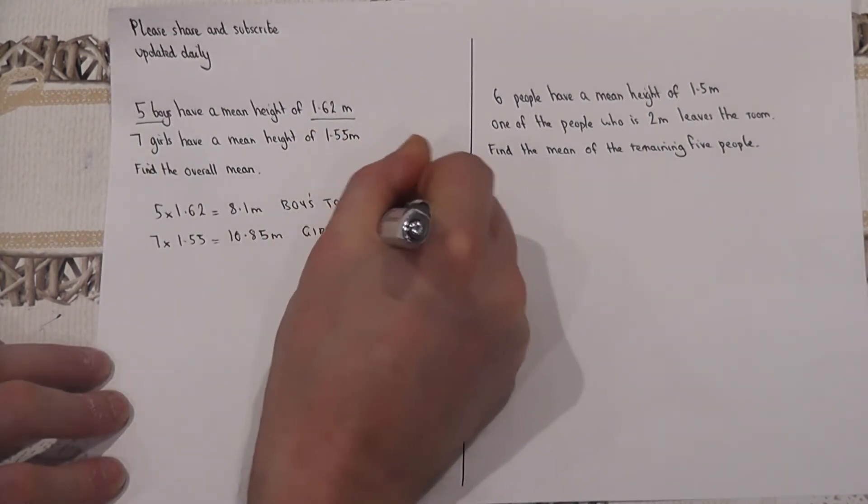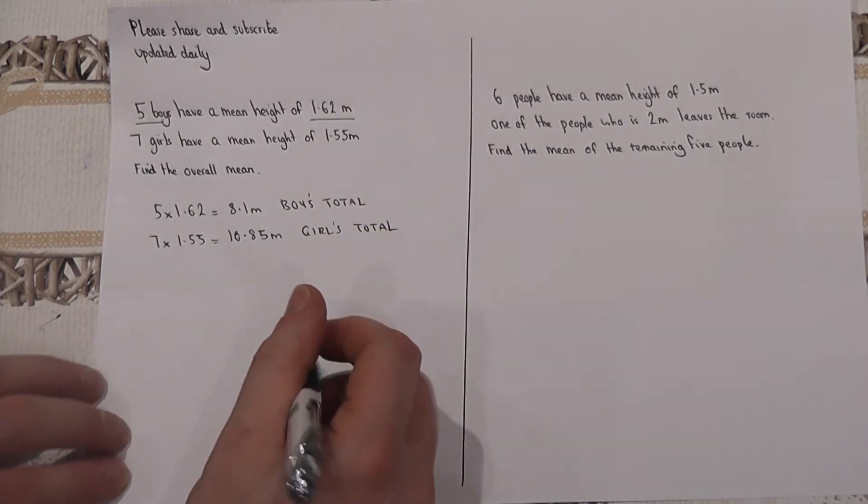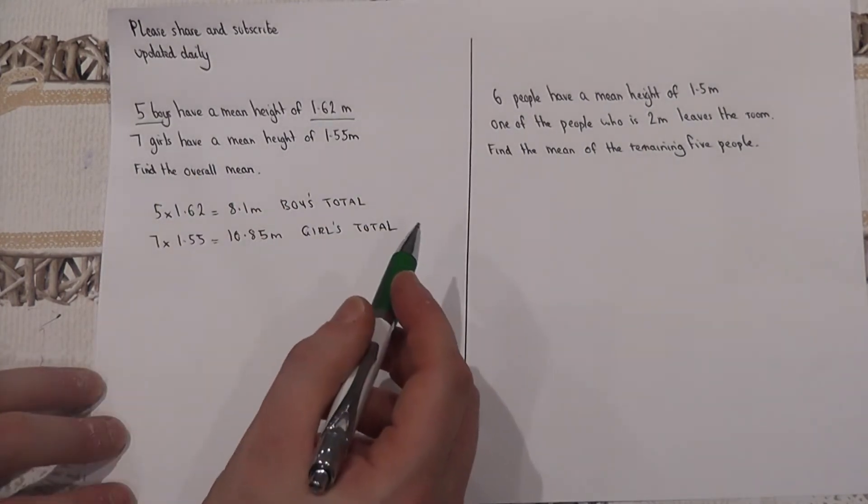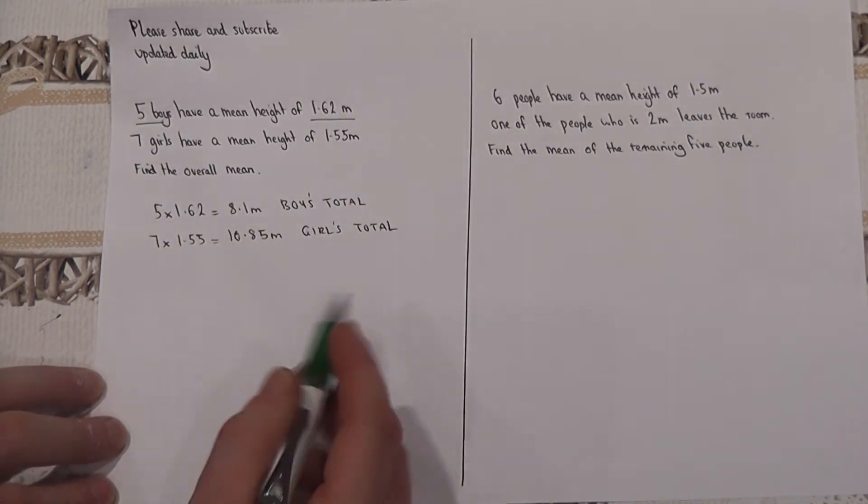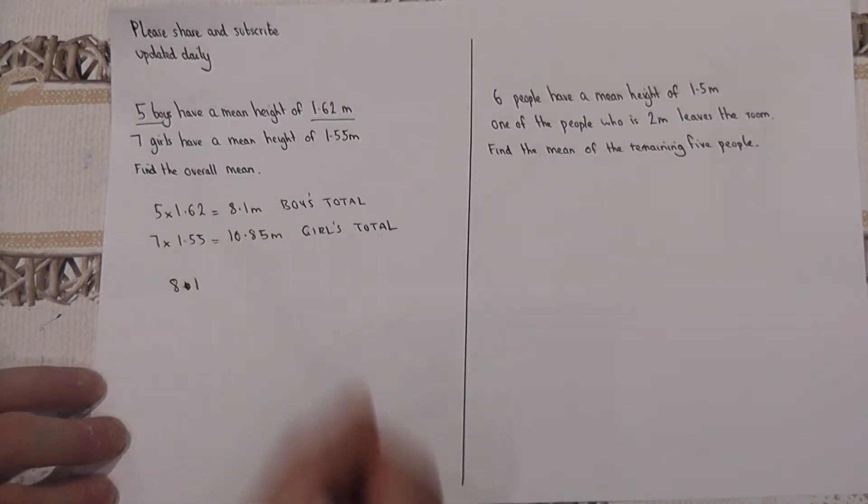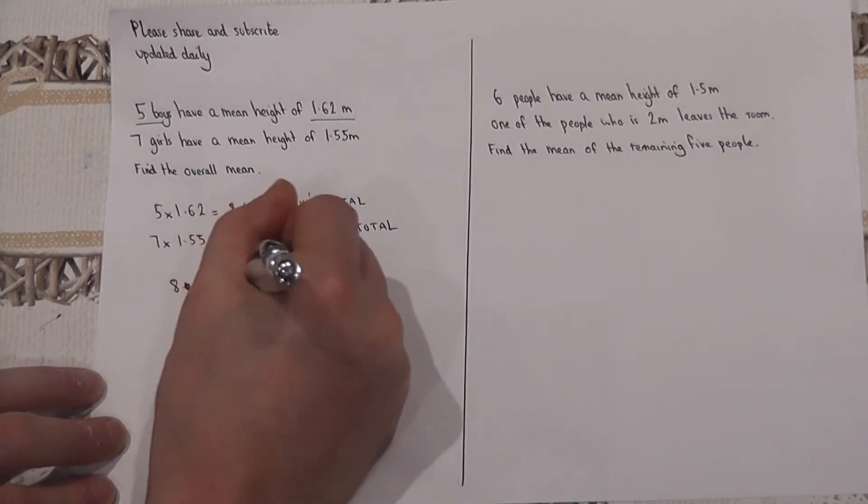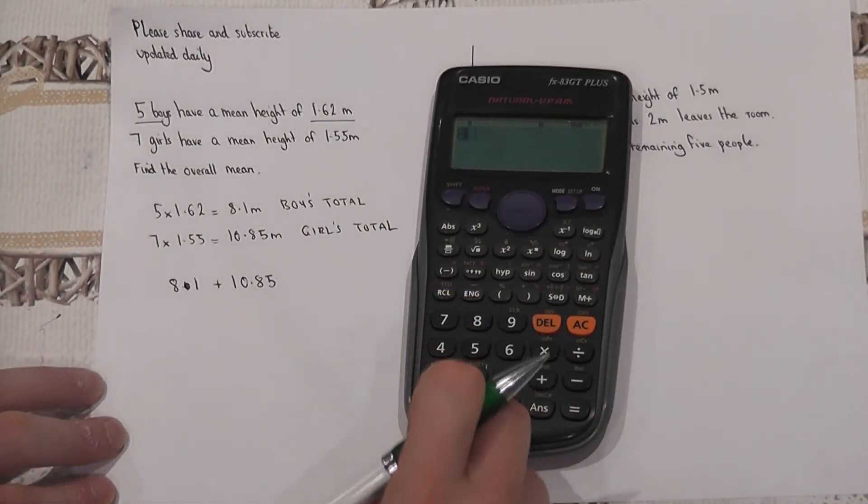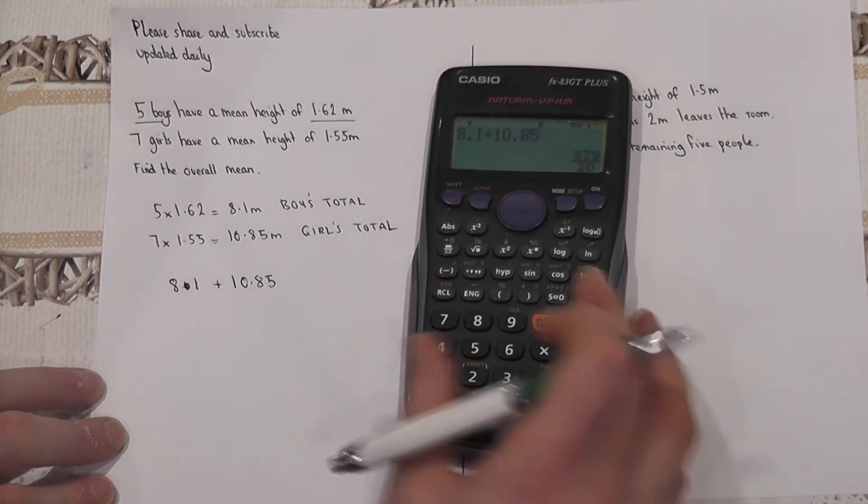So to find the overall mean, I can find the sum of all the heights of the people in the room. So 8.1 plus 10.85. Now I will do this on the calculator which will finish off the division. So 8.1 plus 10.85, which as we know is just 18.95.